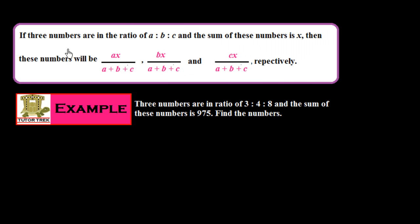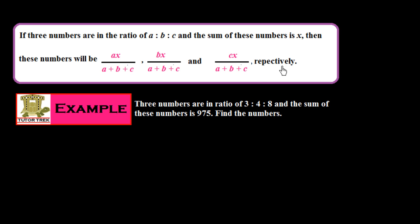Now I would like to tell you another technique for continuous ratio. If there are three numbers in a ratio of a to b to c and the sum of these numbers is x, then these numbers will be ax/(a+b+c), bx/(a+b+c), and cx/(a+b+c) respectively.